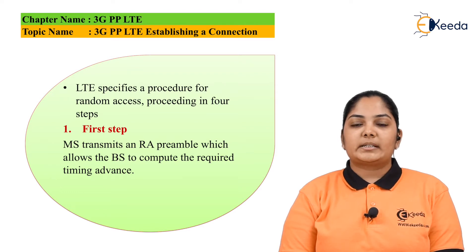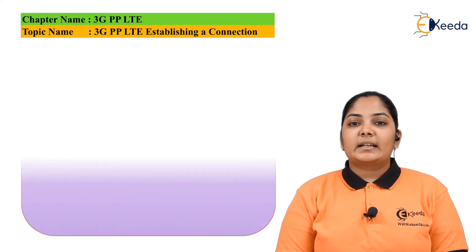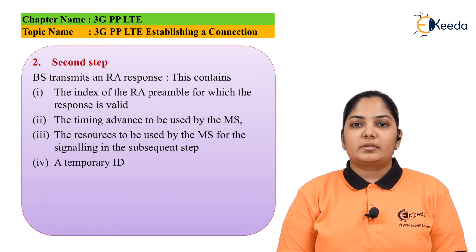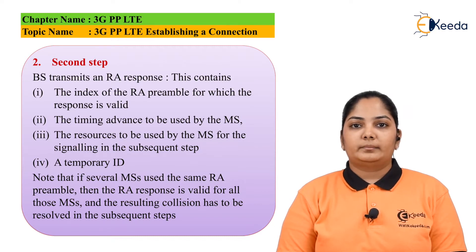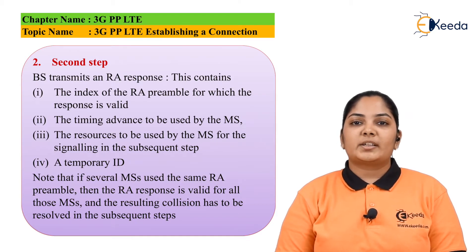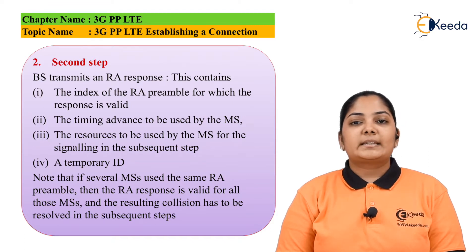The first step is the mobile station transmits a random access preamble which allows the base station to compute the required timing advances. In the second step, the base station transmits an RA response — i.e. a random access response — for the mobile station to which the preamble was transmitted. It contains the index of the random access preamble for which the response is valid, the timing advances to be used by the mobile station, the resources to be used for signaling in subsequent steps, and a temporary ID.